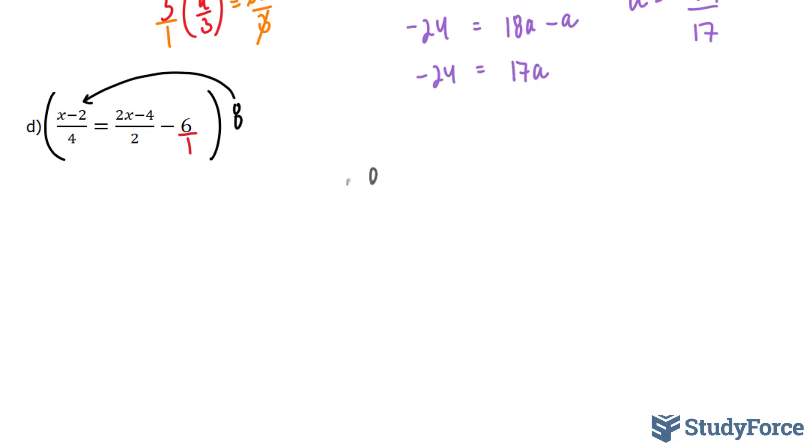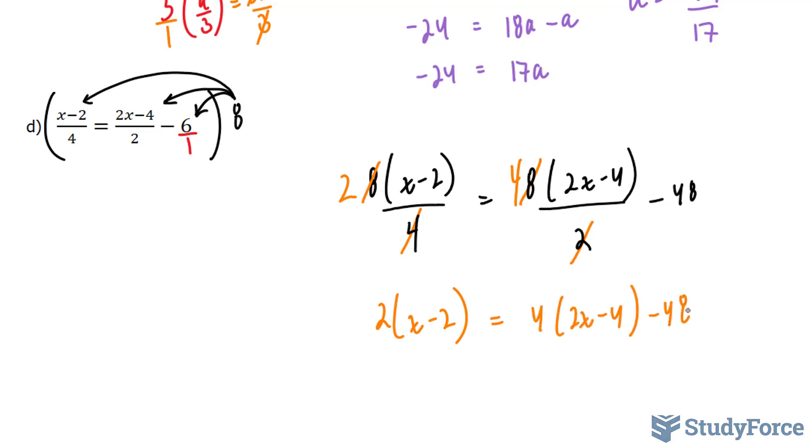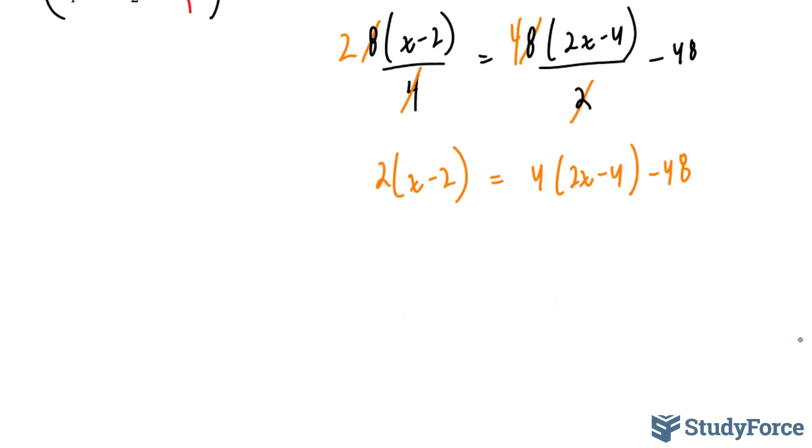I end up with 8(x - 2)/4. I'm not going to cancel anything out yet. So let's multiply this 8 now to this term: 8(2x - 4)/2. And lastly, 8 × -6 gives me -48. Notice that this 8 was a pretty good choice because 8 ÷ 4 gives me 2, and 8 ÷ 2 gives me 4. So now I have a pretty simple equation. Take a look: 2(x - 2) = 4(2x - 4) - 48. Notice we have no more fractions. And that's exactly what we wanted.